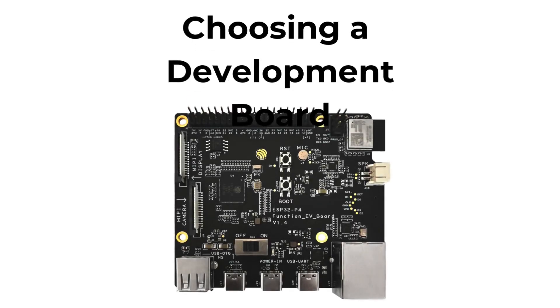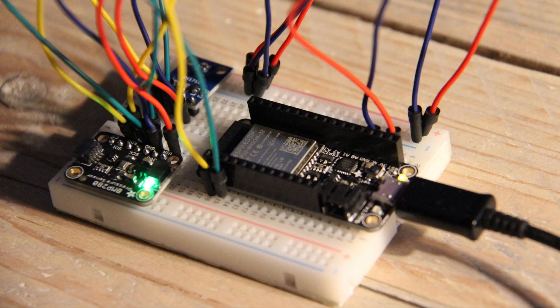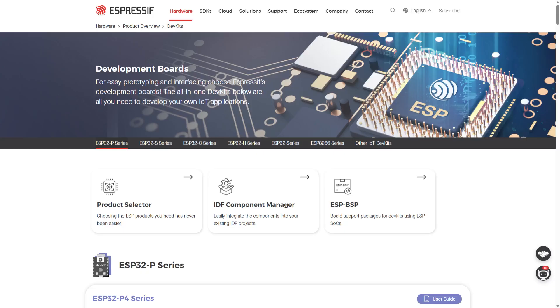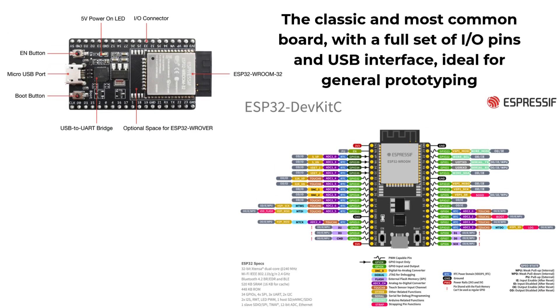Choosing a development board. Once you have selected a SoC or module, the next step is to choose a development board — and this is where most developers and projects begin. These boards provide easy access to all ESP32 features, USB connectivity, power regulation, and often include extras like buttons, LEDs and displays. Here are some popular official Espressif dev kits. The ESP32 DevKit-C is the classic and most common board with a full set of I/O pins and USB interface, ideal for general prototyping.